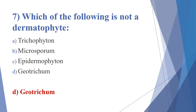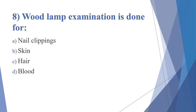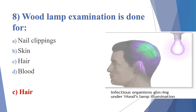Eighth question: Wood's lamp examination is done for — options: nail clippings, skin, hair, blood. The answer is option C, hair. Wood's lamp examination is done for detection of fungal infection on the scalp. The lamp emits UV light, and if the organism is present in the hair, the infectious organism glows under Wood's lamp illumination.